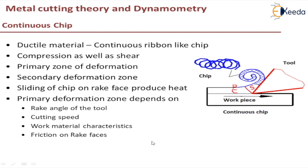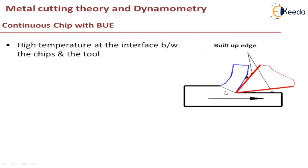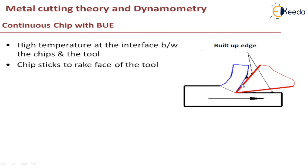Now we'll discuss continuous chip with built-up edge. In continuous chips, because of the chip-tool interface friction, a high temperature is developed at the interface between the chip and the tool. The work material also slides under heavy pressure on the rake face before being transformed into a free chip. Therefore, some portion of the chip sticks to the rake face of the tool. As you can see in the figure, some portion of the tool gets attached to the chip, and because of this close contact it discharges its heat to the tool and thus becomes stronger than the rest of the material flowing over it.